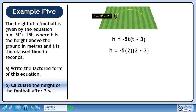Plug in 2 for t. Minus 5 times 2 is minus 10, and 2 minus 3 is minus 1. Minus 10 times minus 1 is 10.